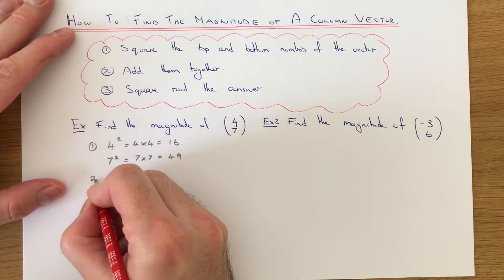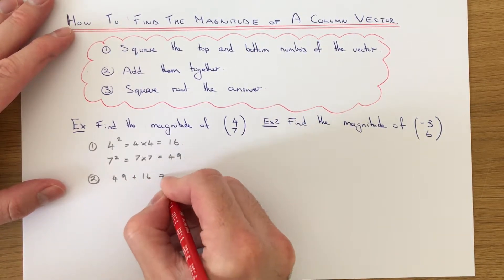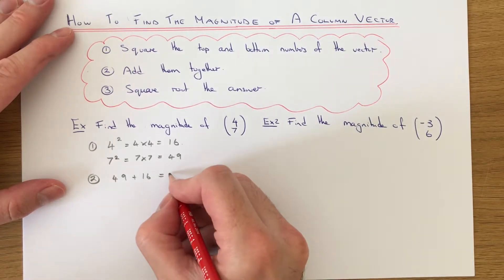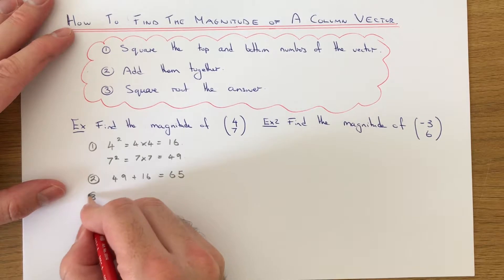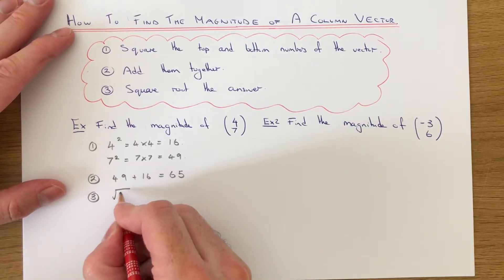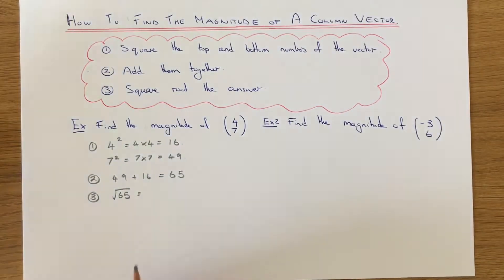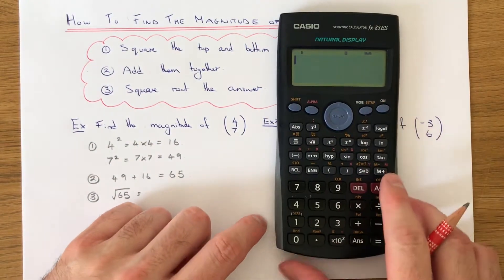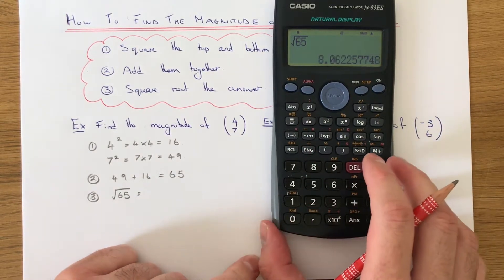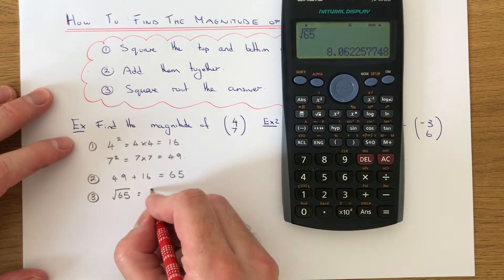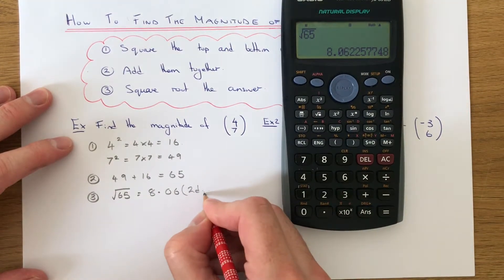Now step 2: we add 49 and 16 together, which gives us 65. Step 3: we need to square root this answer. Just get your calculator. The square root of 65 is 8.06 to two decimal places.